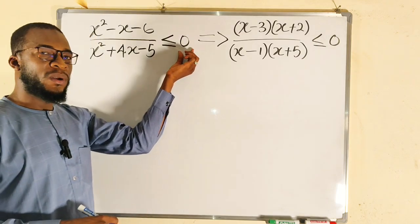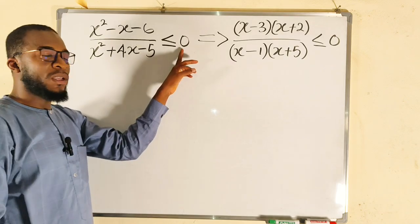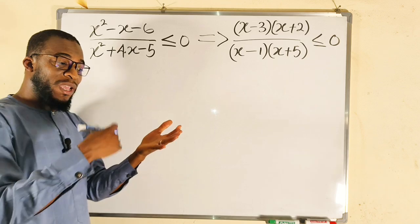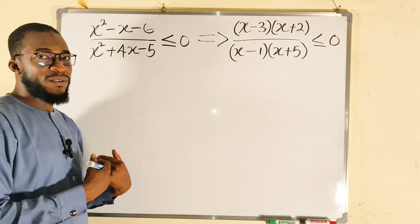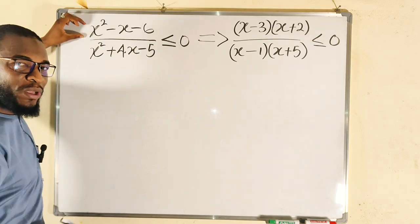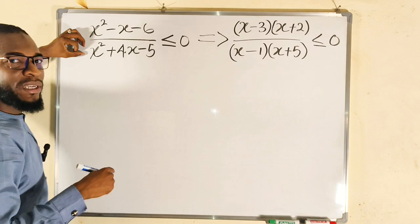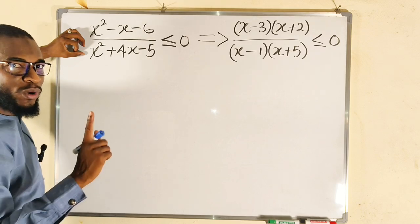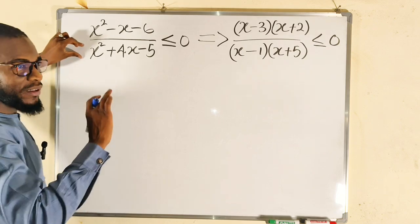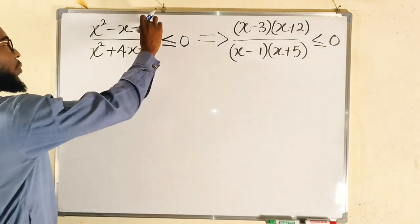What you should consider here is we have less than zero, which implies the left-hand side, if simplified, will be negative — because anything less than or equal to zero is either zero or a negative value. So there are two conditions: the top is positive and the bottom is negative (positive divided by negative gives negative), or the top is negative and the bottom is positive.